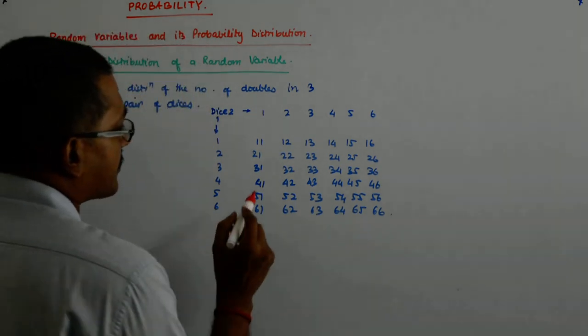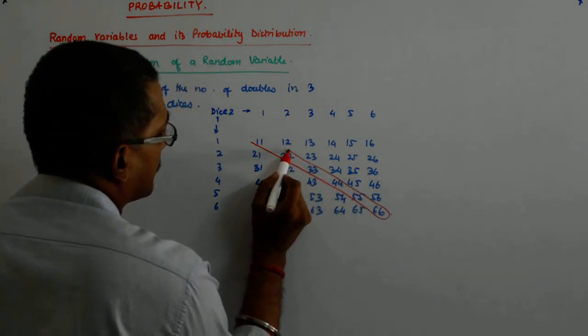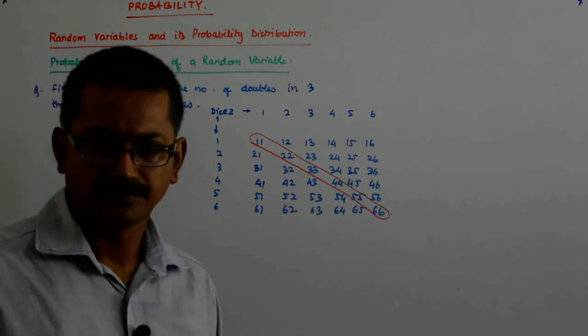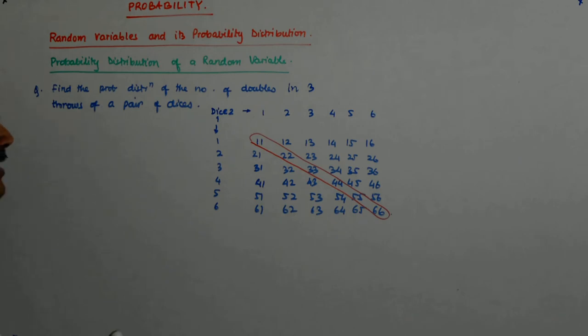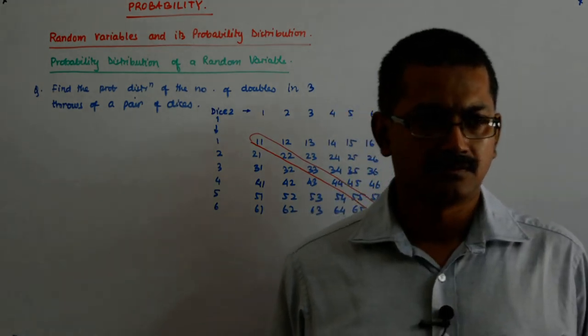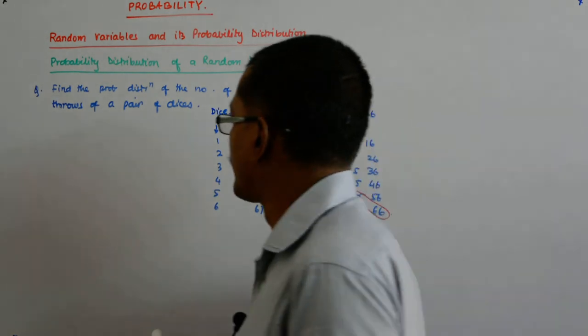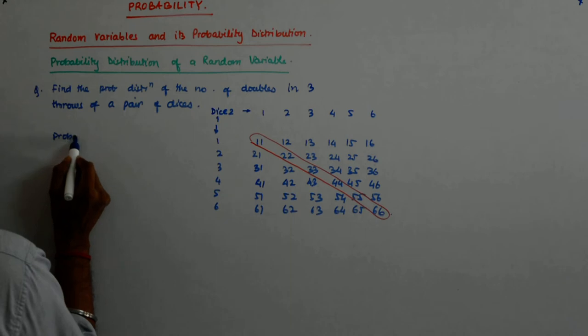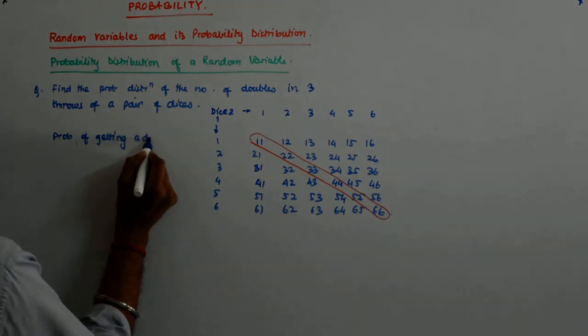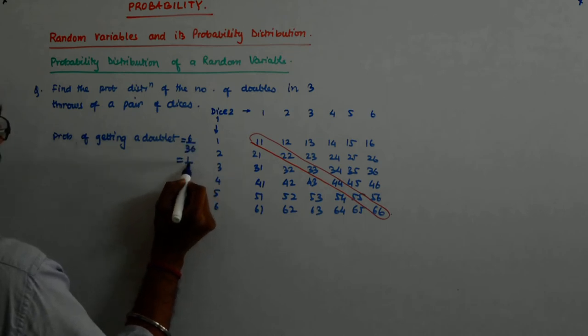Doublets are these, what we are interested in are these. So these are the doublets. So what is the probability of getting a doublet if I throw a pair of dice? It is six by thirty-six, one by six.